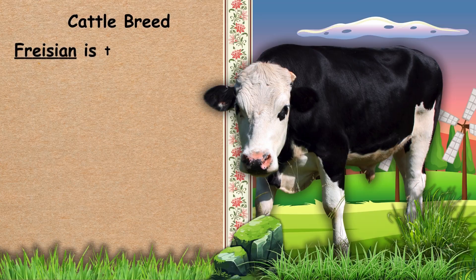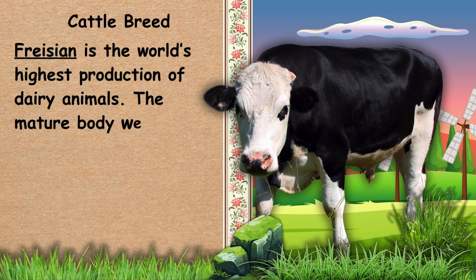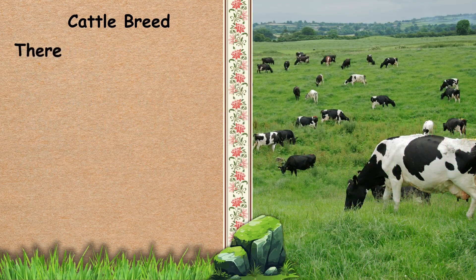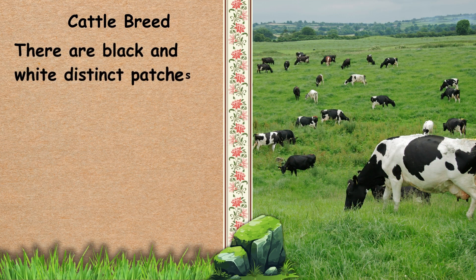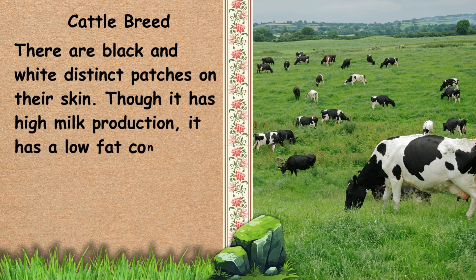Here are the different cattle breeds. 1. Frisian. Frisian is the world's highest production of dairy animals. The mature body weight of male is 580 kg while females are 360 kg. There are black and white distinct patches on their skin.